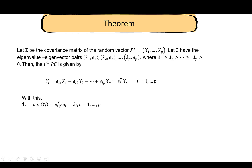With this setup, the variance of the ith principal component is e_i transpose sigma e_i, which equals lambda_i. The covariance between y_i and y_k is zero — the ith and kth principal components are uncorrelated. We won't prove the full theorem, but we will verify these two conditions: that variance of y_i equals lambda_i, and that all principal components are uncorrelated.